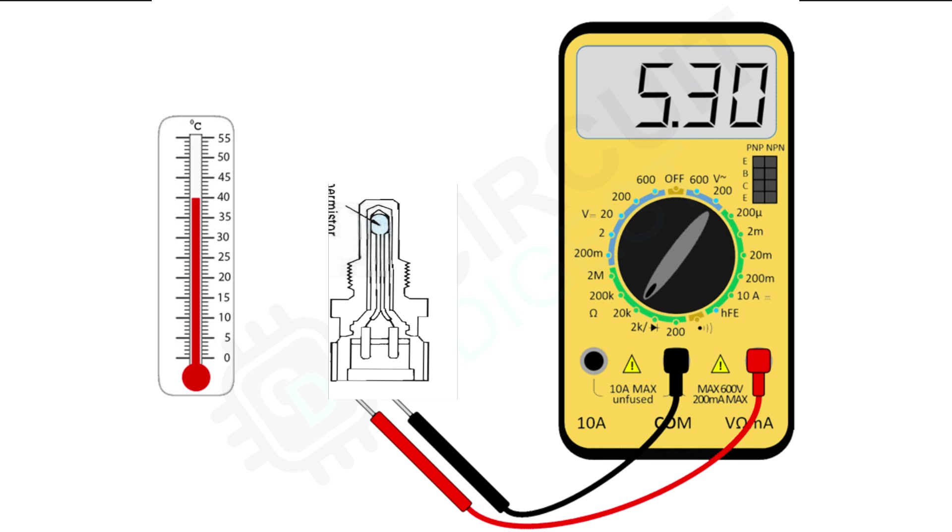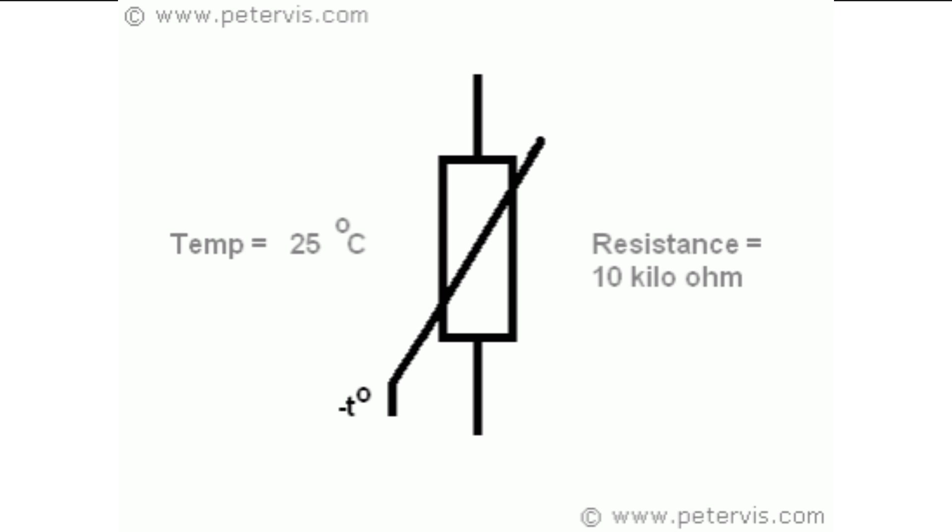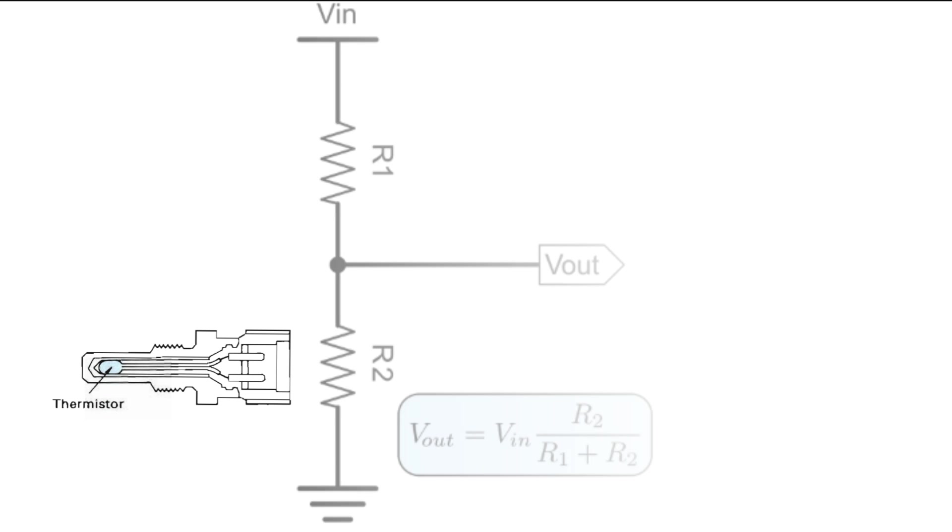Voltage Change Mechanism and Output Signal: The engine coolant temperature sensor typically operates in a voltage divider circuit. Imagine two resistors connected in series with a voltage source applied across them. The voltage across each resistor depends on their relative values. In the engine coolant temperature sensor, one resistor is a fixed value resistor and the other is the thermistor. As the temperature changes, the thermistor's resistance changes, altering the voltage division across the two resistors.